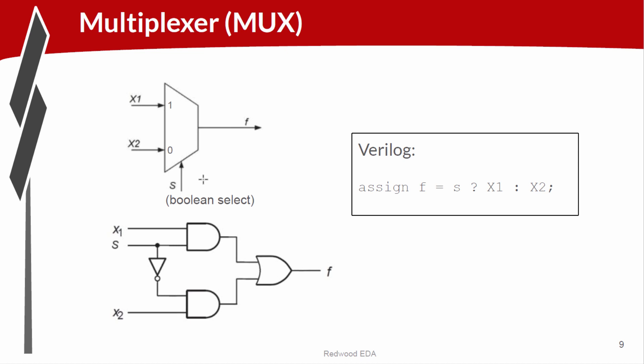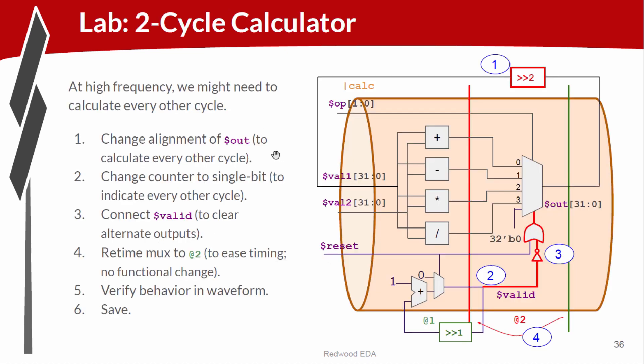So this is one way to implement the multiplexer circuit. So if we're going to run this calculator in a high-frequency circuit, we might need two cycles to perform the operation.